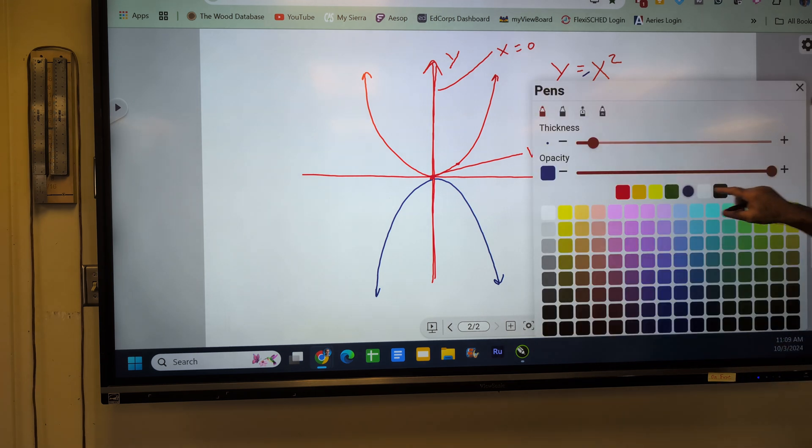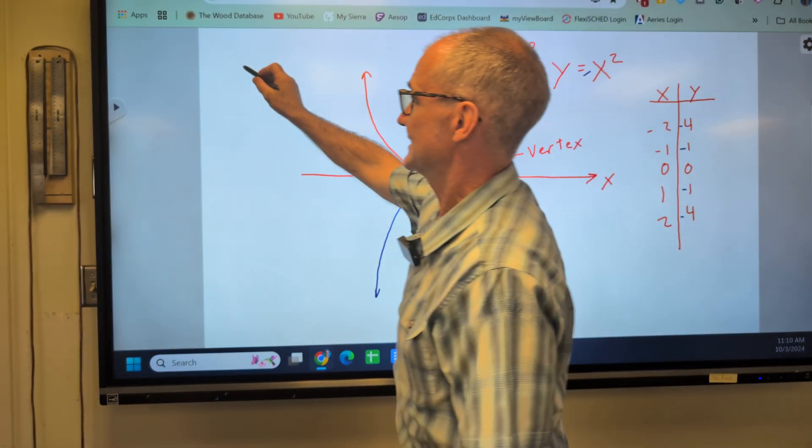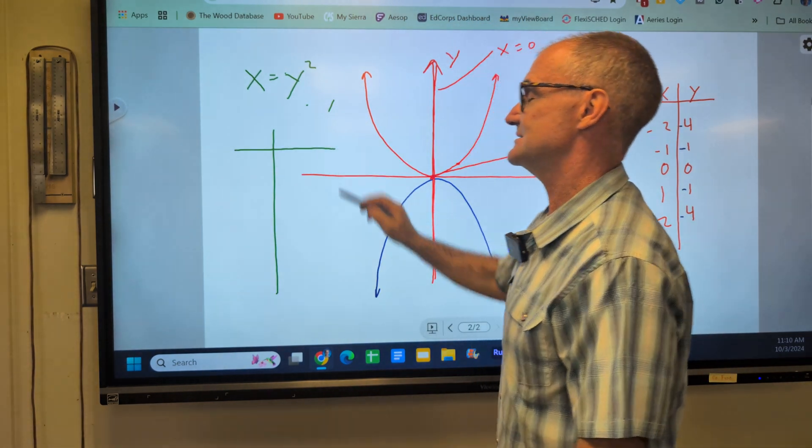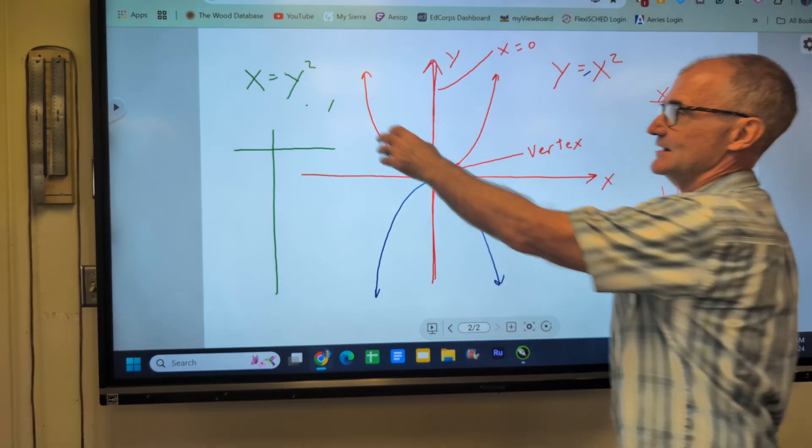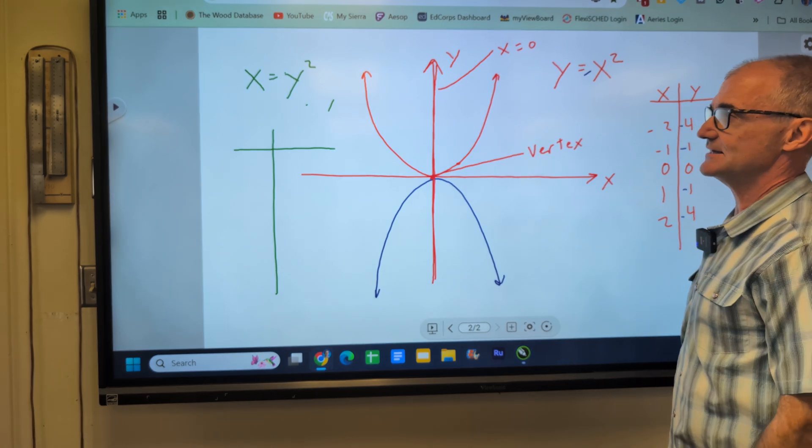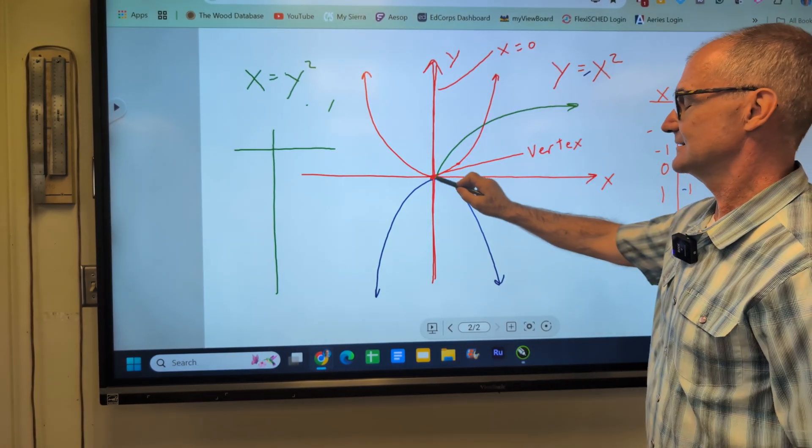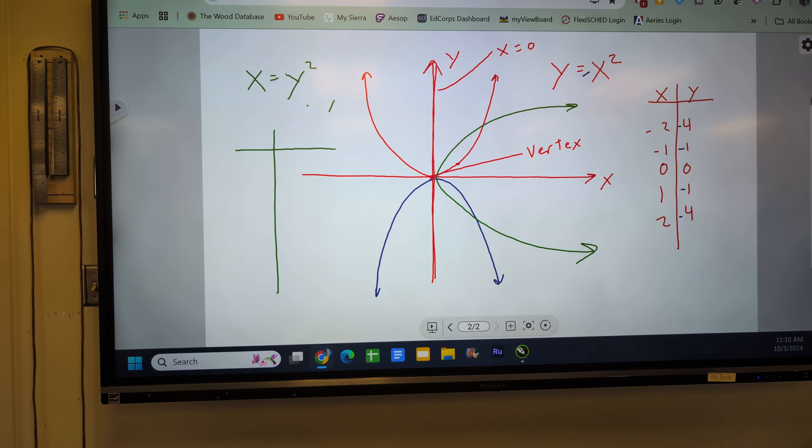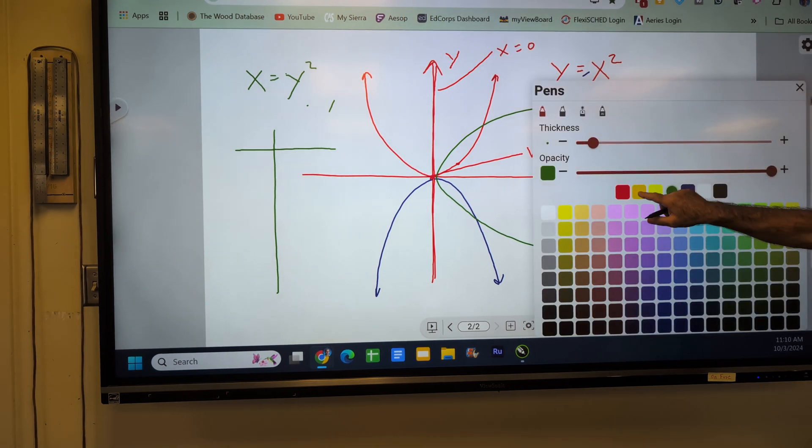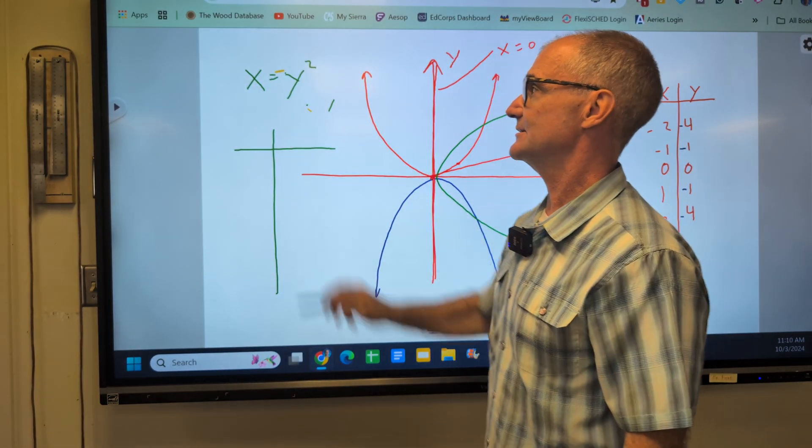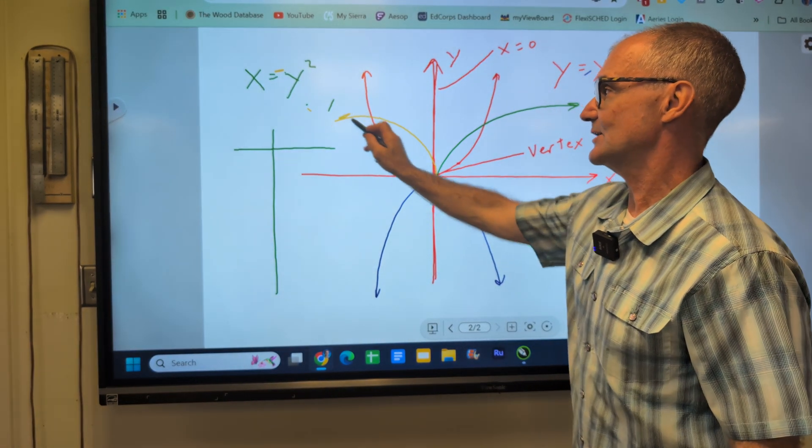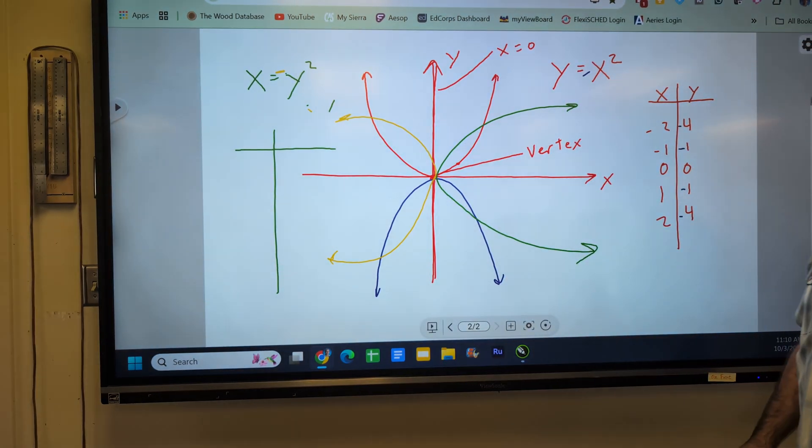A couple more scenarios is I could reverse my x's and y's and have x equals y squared. If I have x equals y squared, no matter what I plug y in, I'm going to square it, I'll always be positive. So x equals y squared is going to look like that, opening to the right. And then the fourth case scenario is if I had x equals negative y squared, whatever value I have for y squared would then be negative, making my x's negative. So x equals negative y squared would open that way out.